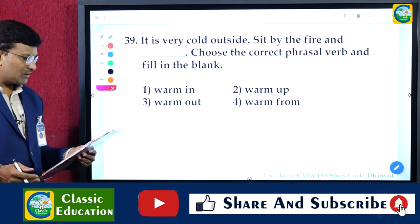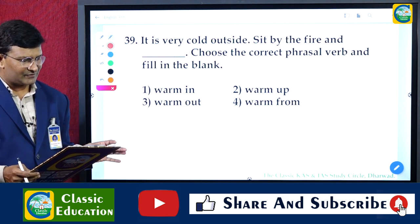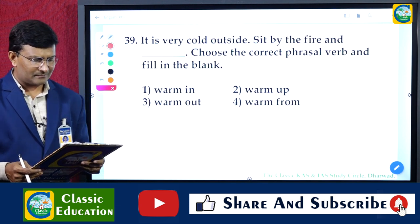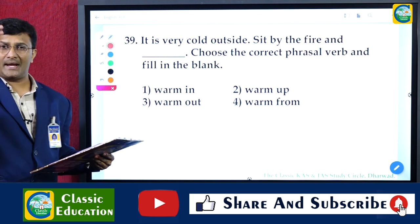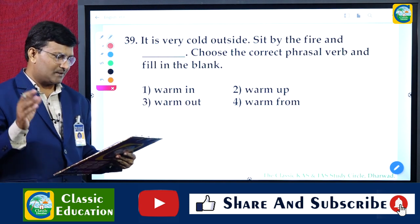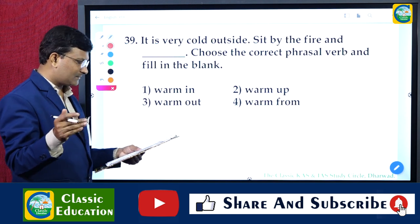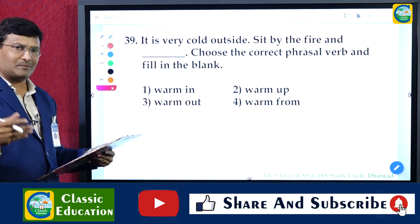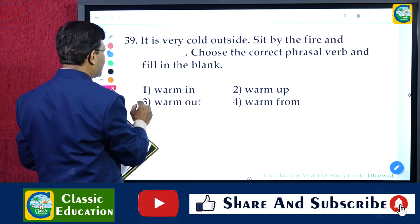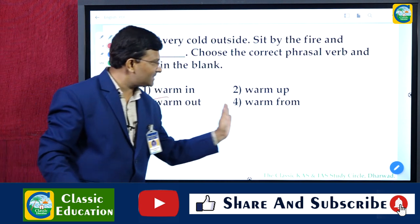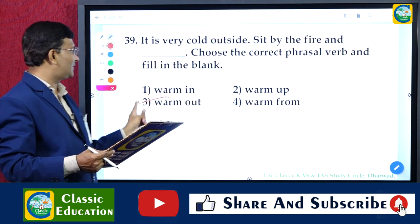Question 39: 'It is very cold outside. Sit by the fire and ___.' Choose the correct phrasal verb. Options include warm up, warm out, warm in, warm from. 'Warm up' means to make or become warm. 'Warm from' means preventing from getting cold. The correct answer is 'warm up' — sit by the fire and warm up.